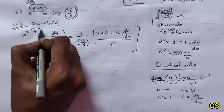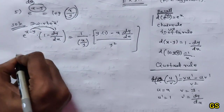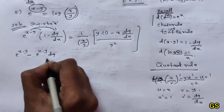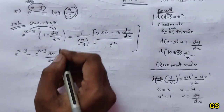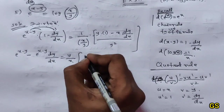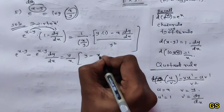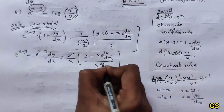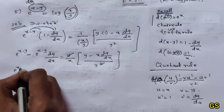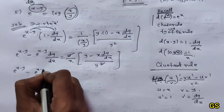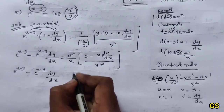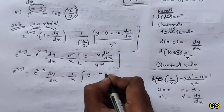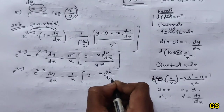So applying differentiation to e power (x minus y): we get e power (x minus y) minus e power (x minus y) into dy/dx. This equals the reciprocal — y by x — times y into 1 minus x into dy/dx, divided by y squared. The y cancels, giving: y times e power (x minus y) minus e power (x minus y) times x into dy/dx equals 1 by x, then simplifying the y minus x into dy/dx terms.